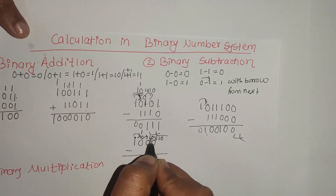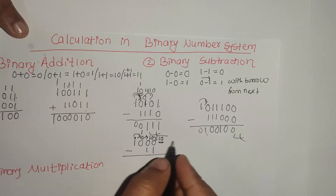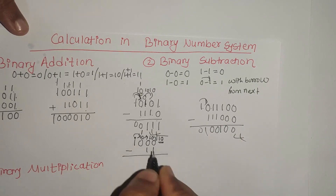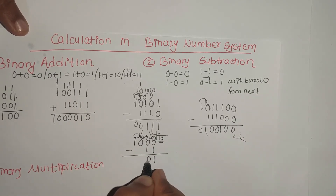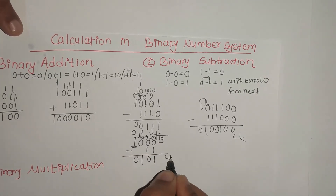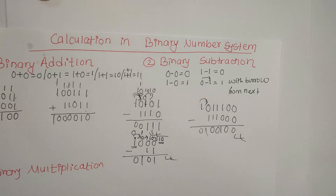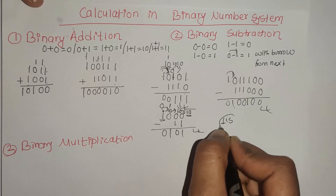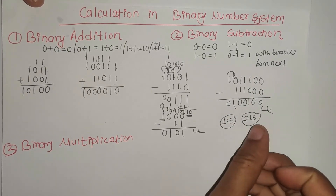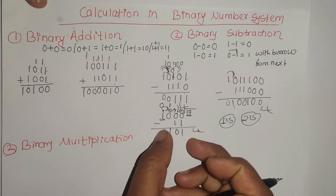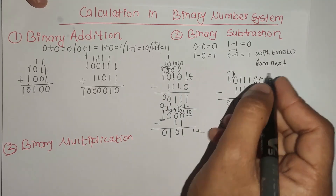1 minus 0 is 0. 1 minus 0 is 0. 2 minus 1 is 0. This is 0. This is subtraction. In binary subtraction, we have to use one's complement and two's complement to subtract. We will show this in the next video. We will convert to decimal to verify.